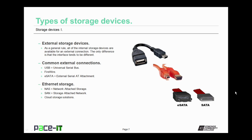Now let's talk about some external storage devices. As a general rule, all of the internal storage devices are available for an external connection — the only difference is that the interface tends to be different. Common external connections can be made through USB, universal serial bus, or FireWire, the IEEE 1394 standard. And now we have eSATA, external serial AT attachment, that some devices may also implement.